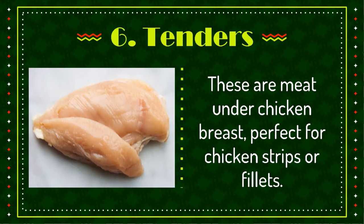Tenders. These are little bits of tender meat under each chicken breast. Tenders are not more than one and a half inches in size and totally delicious when fried. Since they are smaller than the breast cut, they are more moist and make great finger food such as chicken fingers, chicken goujons, chicken strips, or chicken fillets.